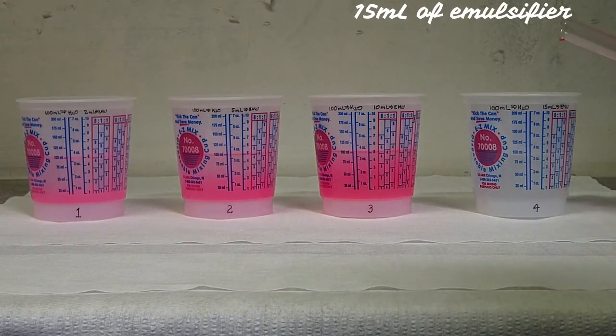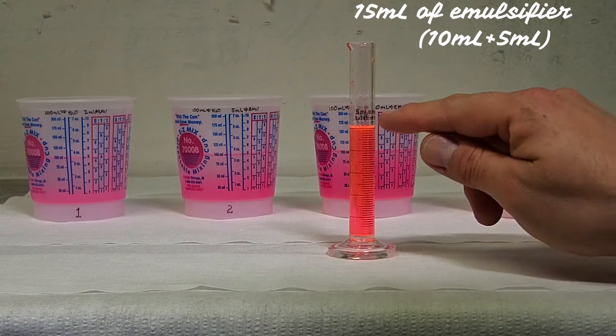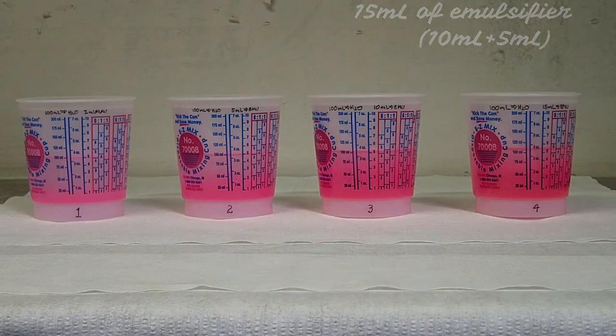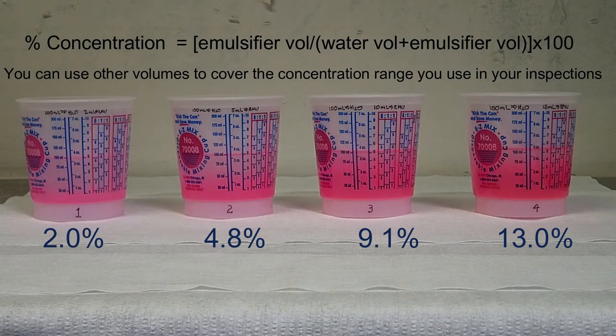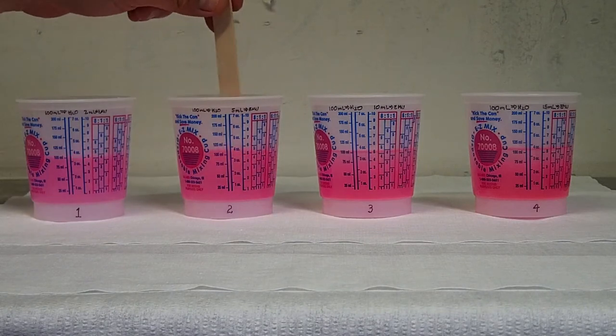For the last sample I am using 10 milliliters plus 5 milliliters because I don't have a cylinder which can measure 15 milliliters. You can use syringes to measure these volumes. So each sample has the concentration shown. Stir each sample to have good mixing.